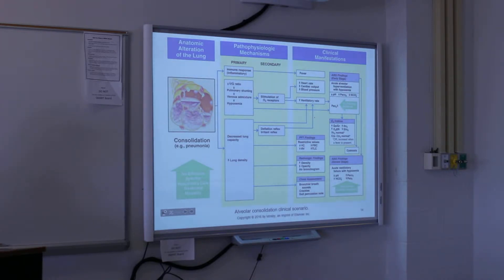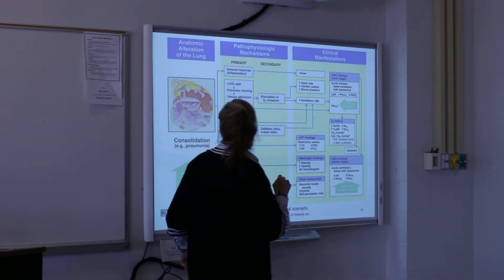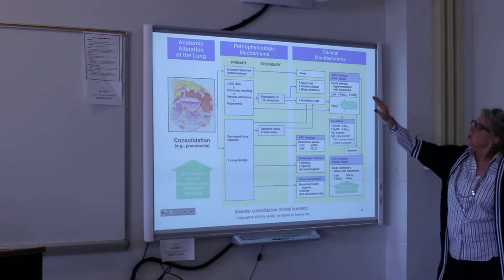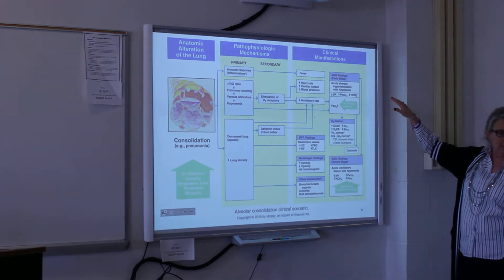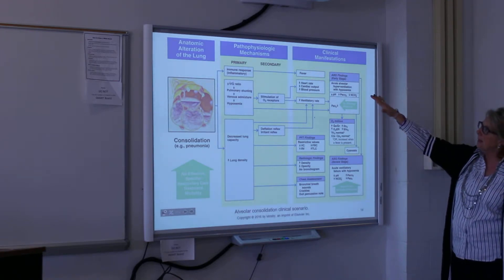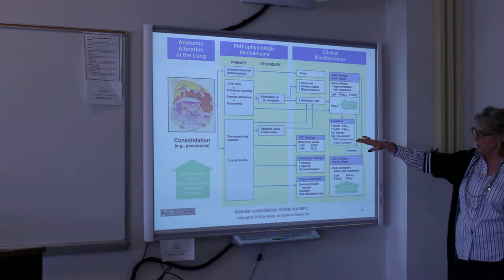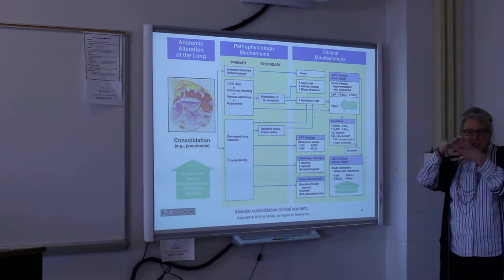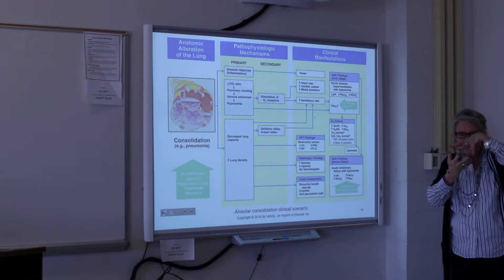Turn to page 132. Instead of putting these concepts in every chapter, the book put them in this one chapter at the beginning. The anatomic alteration in the lung is consolidation — there is something inside the alveoli.